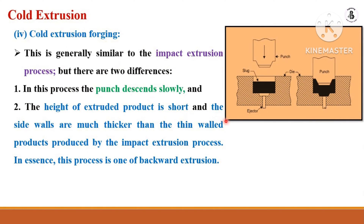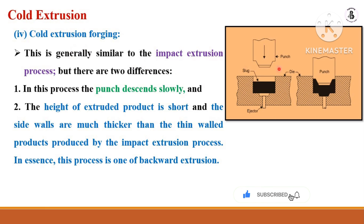The fourth type is cold extrusion forging. You can see the die material and the punch. The shape of the die and punch depends on the complexity of the job, and between the punch and die is the slug or raw material. An ejector pin is used to eject the finished component. By lowering the punch towards the die, the material achieves the desired shape and size. Forging means one kind of hammering with the punch towards the die material.